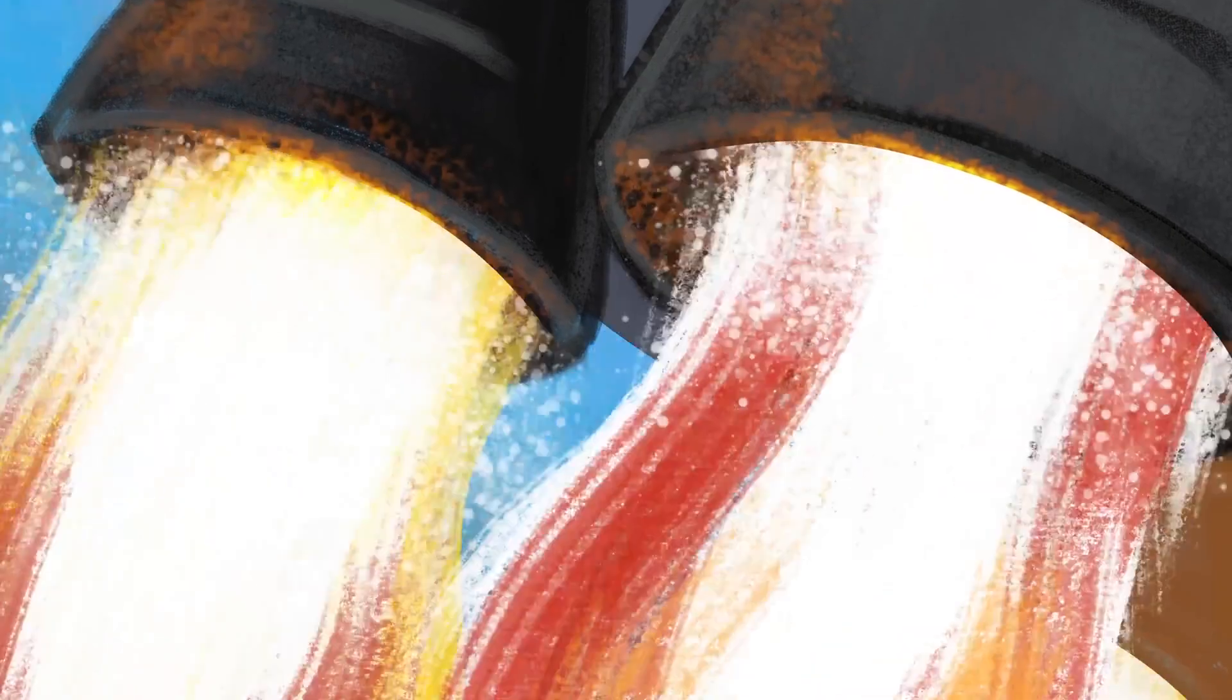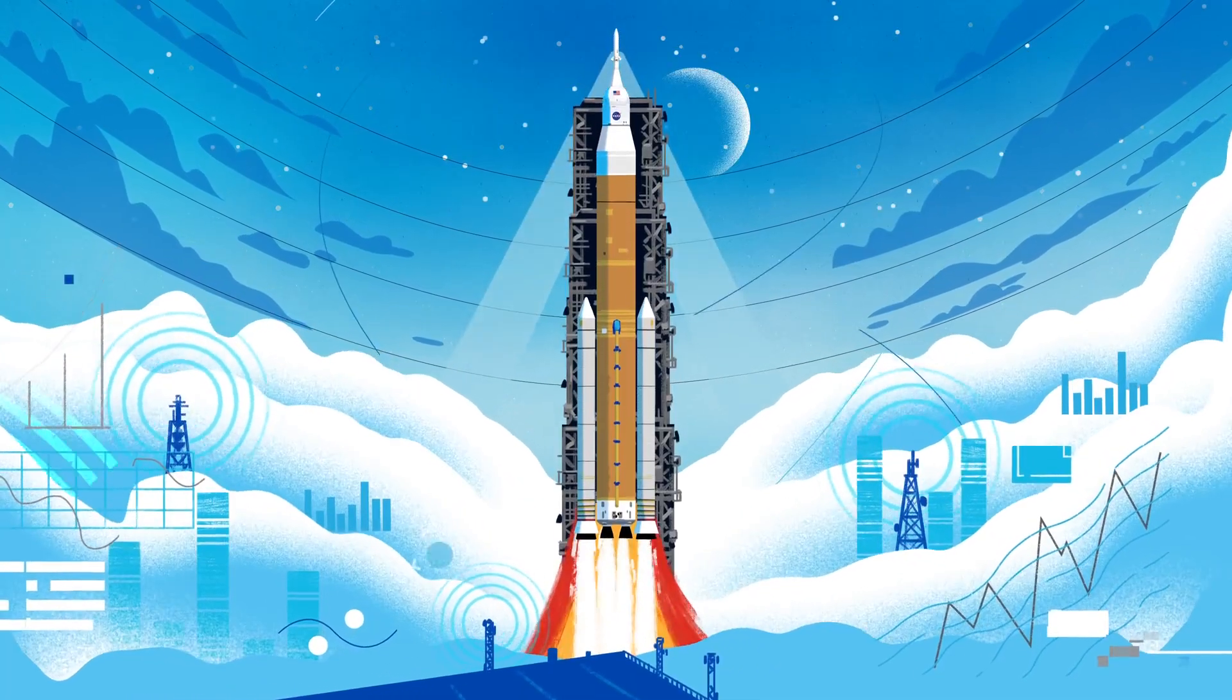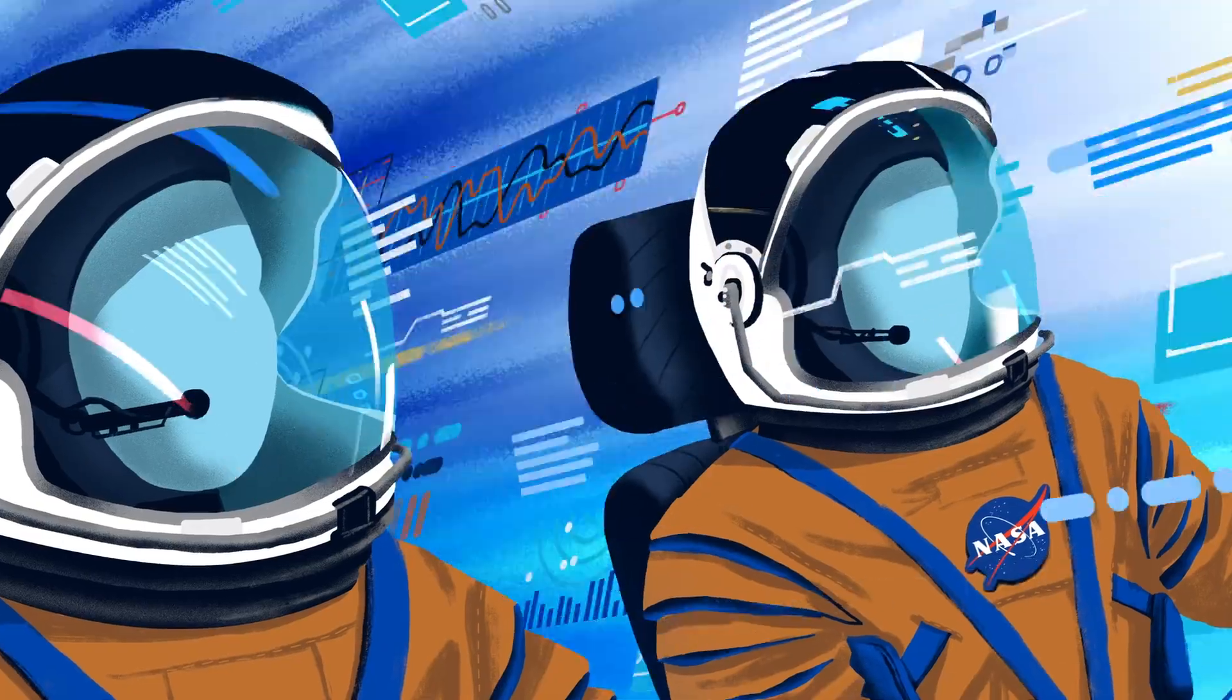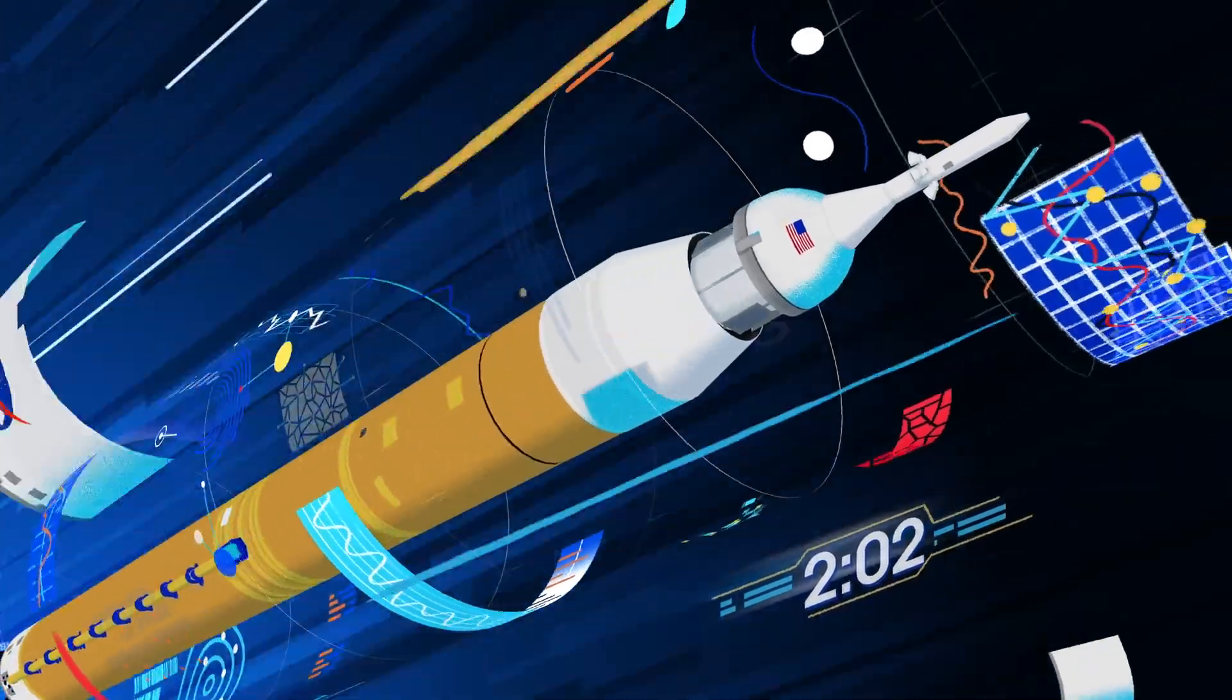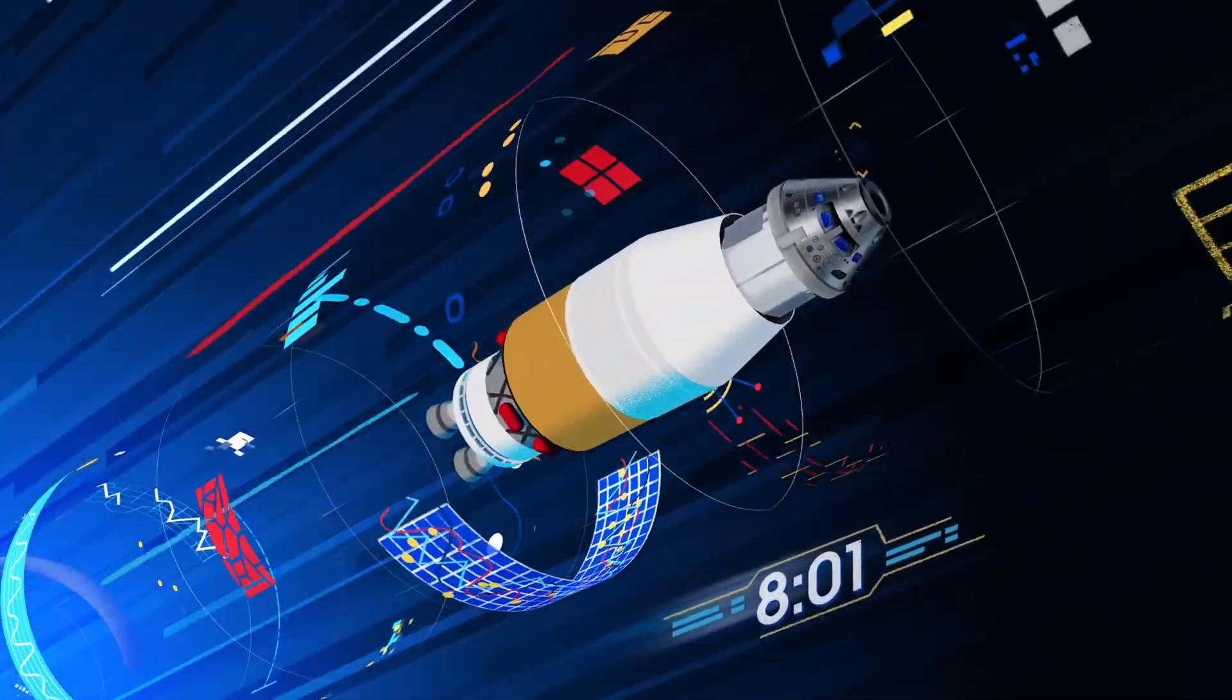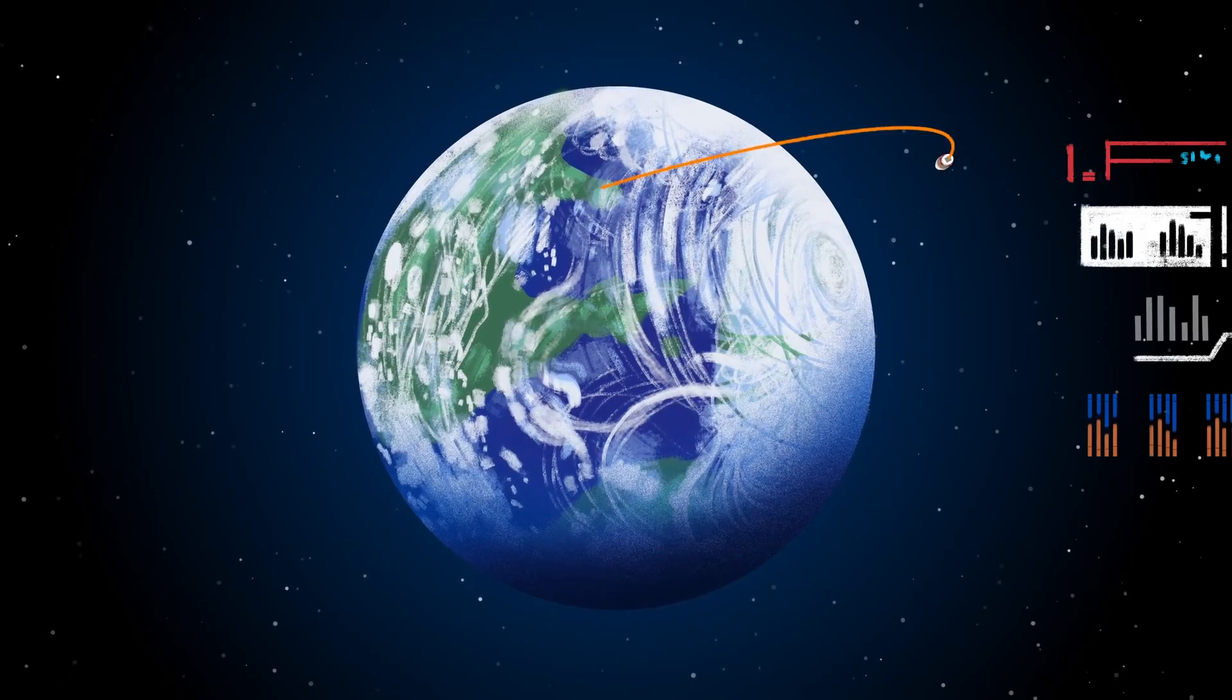Once ignited, there's no stopping what comes next. All four RS-25 engines and the two solid rocket boosters come to life, thundering our crew upwards. Two minutes after ignition, the solid rocket boosters are spent and released. Eight minutes after launch, the core stage is depleted and separated. The upper stage fires briefly, placing Orion into a parking orbit around the Earth.